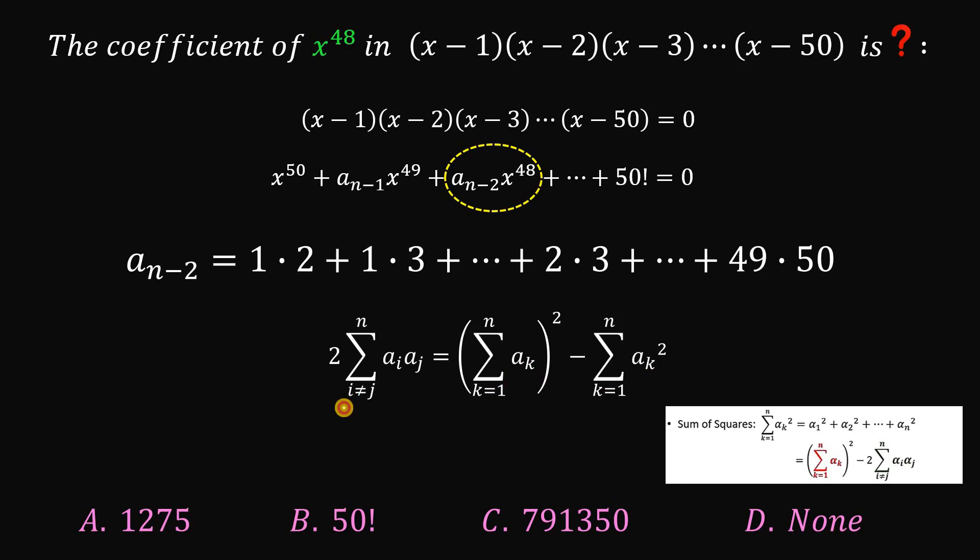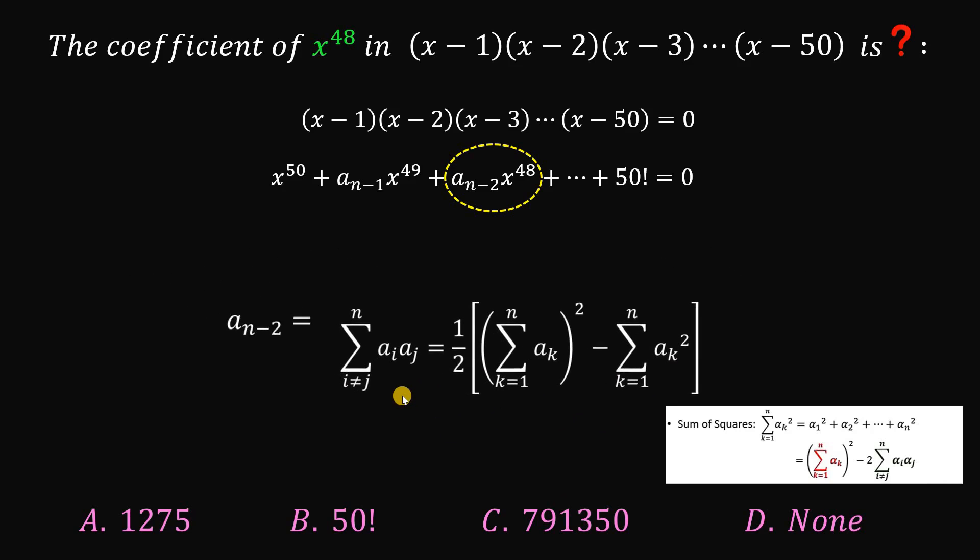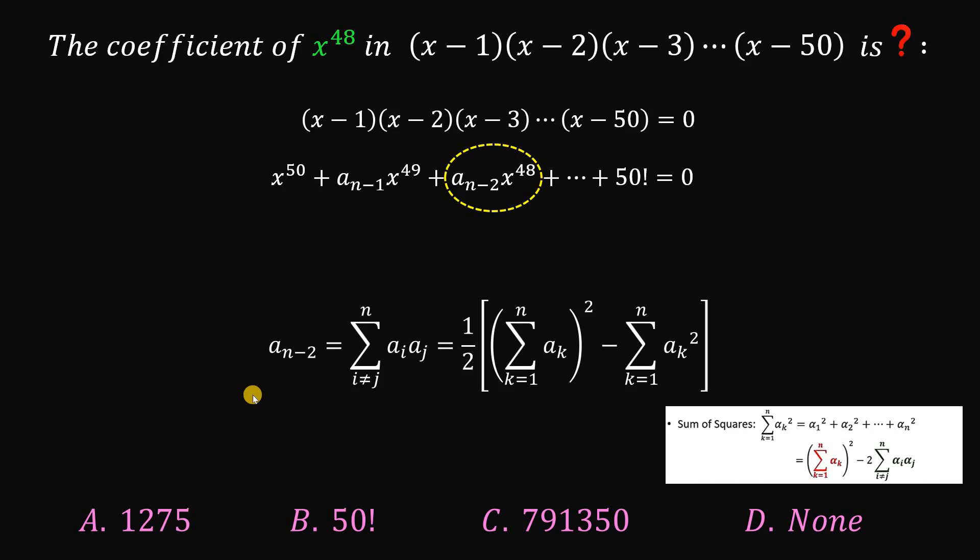So now, if we want the sum of pairs only, let's divide all of this term by 2. And here's the formula to find the sum of pairs, which is what we want to find. So now, let's focus on this.